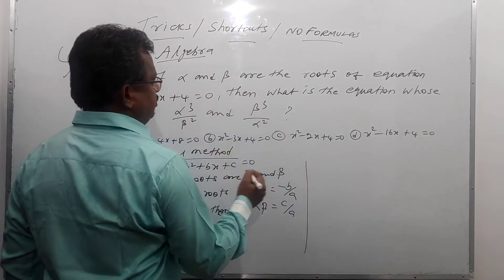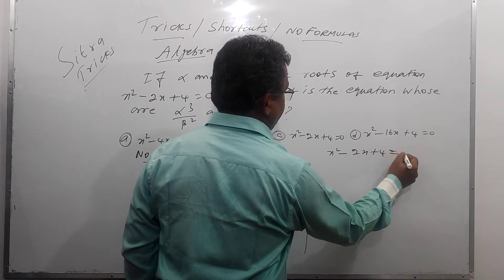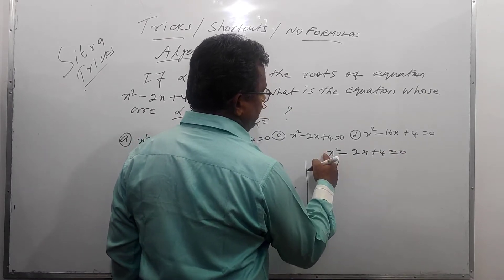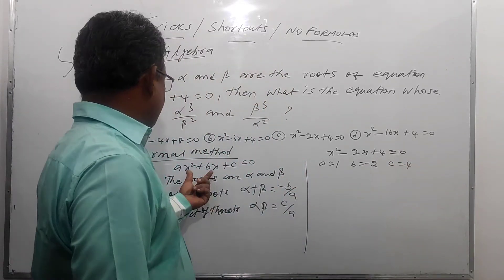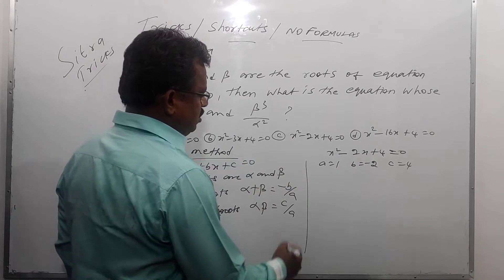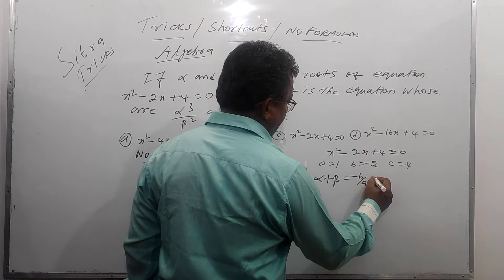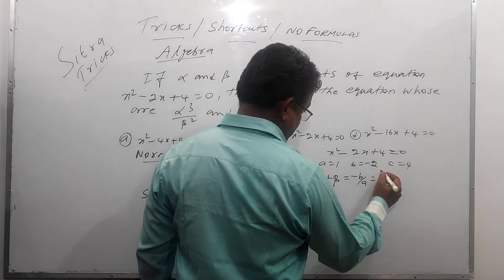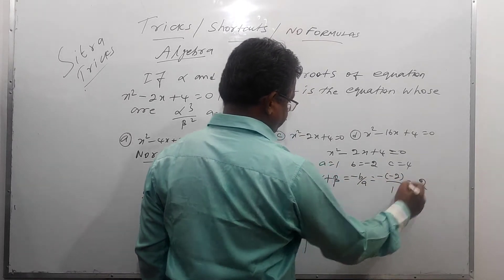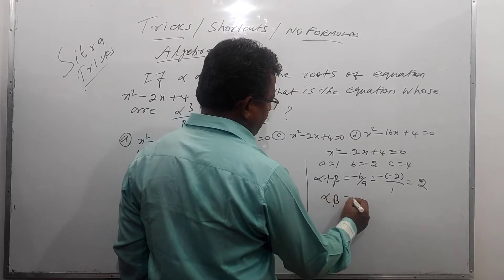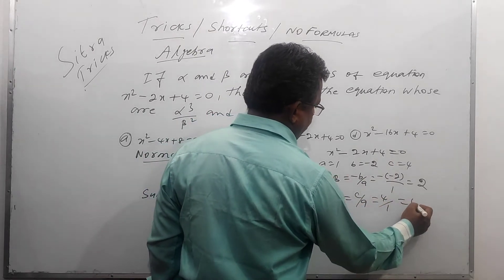From the given equation x squared minus 2x plus 4 equal to 0, a equals 1, b equals minus 2, c equals 4. So sum of the roots, alpha plus beta equals minus b by a equals minus into minus 2 by 1, equal to 2. Product of the roots, alpha beta equals c by a equals 4 by 1, equal to 4.